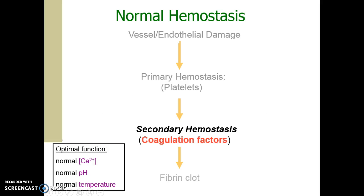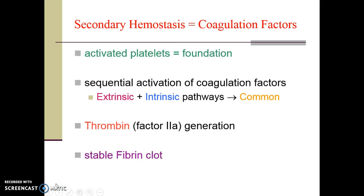Secondary hemostasis is coagulation — the process of converting liquid blood into a solid clot. The sequential activation of coagulation factor proteins in an orderly fashion is analogous to dominoes falling over in a preset pattern. The end product is a stable and strong, vibrant blood clot. Tissue injury has triggered primary hemostasis to build a stable foundation of activated platelets bound to von Willebrand factor and the exposed subendothelial collagen layer. Once this foundation is built, the sequential activation of coagulation factors may occur through three pathways. Both the extrinsic and intrinsic pathway activate the common pathway, which results in the generation of thrombin, or activated factor 2, and then converts fibrinogen into the fibrin blood clot.